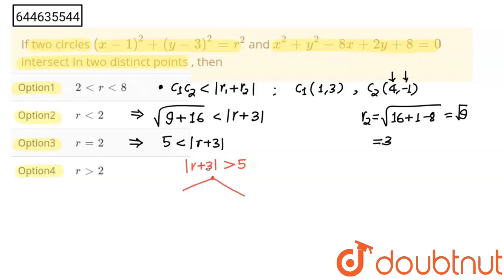The first is r plus 3 is less than minus 5, and r plus 3 is greater than 5. From here we will get r less than minus 8, and from here we will get r greater than 2. And radius cannot be negative, so this will be neglected, and r greater than 2.